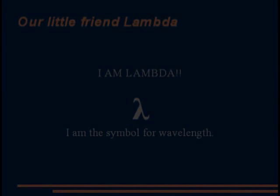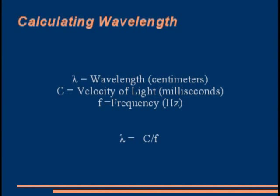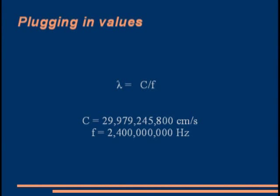Now to calculate the wavelength we need to know C which is the velocity of light and F frequency. The letter C is going to take place for the velocity of the speed of light and lowercase F is going to take place for our frequency. Because we are going to be working a lot in 2.4 GHz, we know that the frequency is going to be 2.4 GHz and we know that the speed of light is 29,979,245,800 centimeters per second.